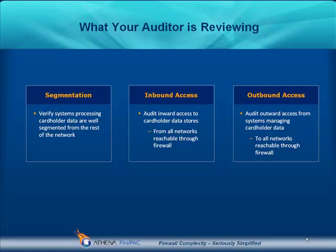The second thing your auditor is going to look for is inbound access controls — that is, what services are allowed to the DMZ, what services are allowed to credit card holder data stores, and what networks have access to these things. The third thing the auditor is going to look at is outbound access — that is, what is allowed out from the systems that are managing credit card data, looking at all of the networks that are reachable through the firewall.